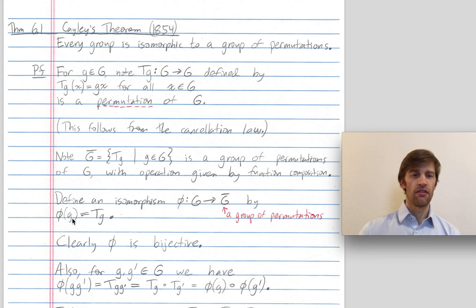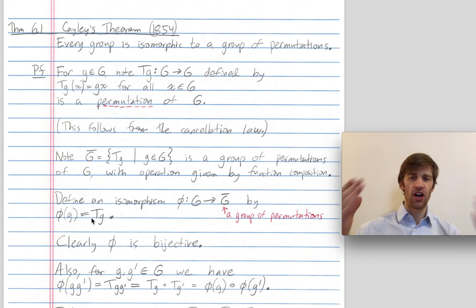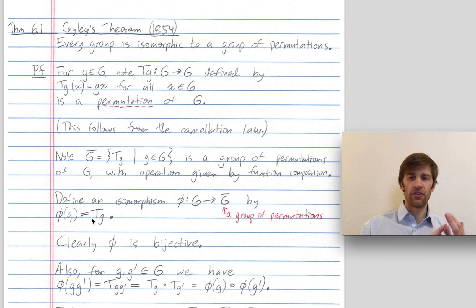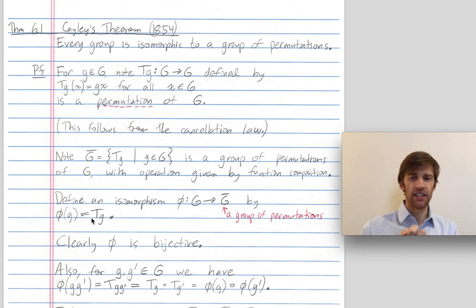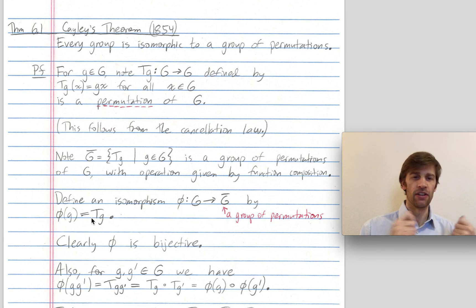The operation on G-bar is just the operation you have on any group of permutations — it's function composition. Our isomorphism phi maps from G to G-bar by sending g to T sub g, so phi of g is going to be T sub g. It's clear that phi is bijective, right? We saw in the U10 example, my elements 1, 3, 9, and 7 of G mapped bijectively onto my elements T1, T3, T9, and T7 of G-bar.